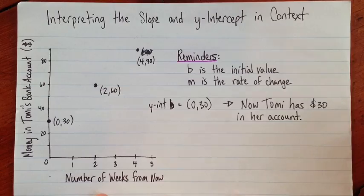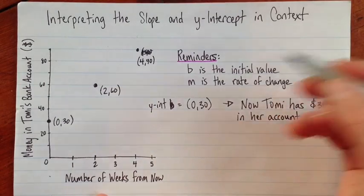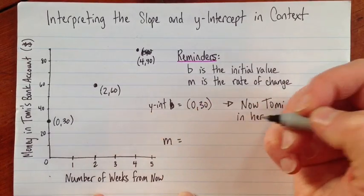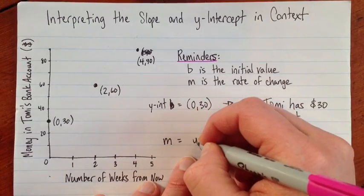So that's what the y-intercept tells us. The slope. First, let's calculate the slope. Let's use the slope formula this time.